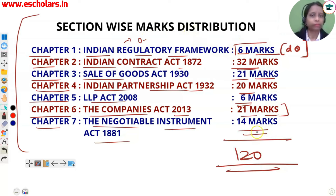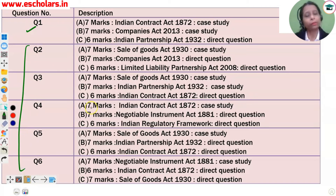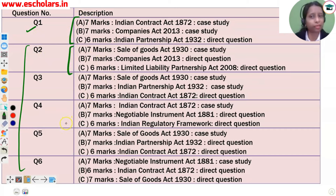Now let's go into more detail. You will get 6 questions, all of 20 marks each. Question number 1 is compulsory, and questions 2 to 6 are optional — attempt 4. All questions come in three parts: A, B, and C. Question number 1: Part A is 7 marks, Part B is 7 marks, Part C is 6 marks.